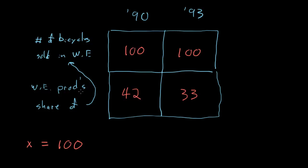But what exactly does this mean? Well, the 100 bicycles were sold in Western Europe, and they were from all over the place. Some of them were probably from North America, some of them were from Asia. And it turns out that 42% of those 100 were not imported. They were produced and sold in Western Europe. So these numbers represent those bicycles that are made and sold in Western Europe.